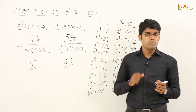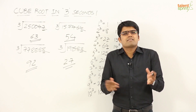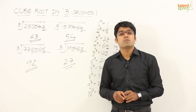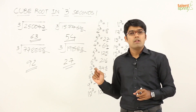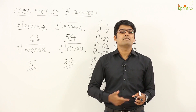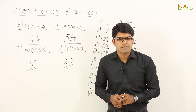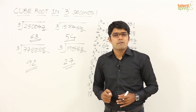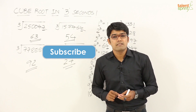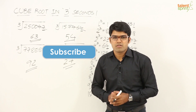So this is how you can get the cube root of perfect cubes in 2 very simple steps in just about 3 seconds. One very important point before we close: this technique is applicable only if the given number is a perfect cube. If it is not a perfect cube, there is another procedure to follow to get an approximate cube root. Thank you all for watching. Don't forget to subscribe to our channel to get more such videos with techniques to solve quantitative aptitude questions.